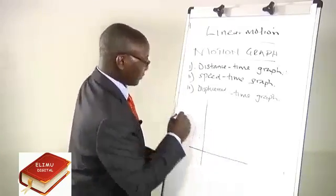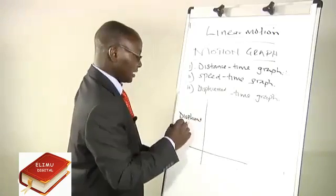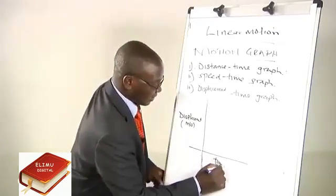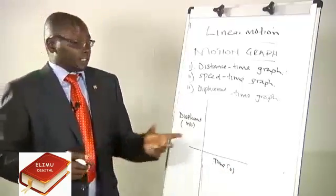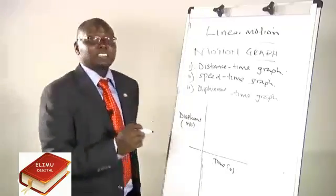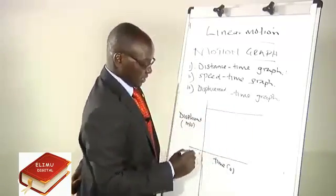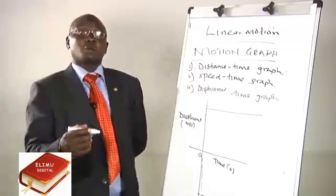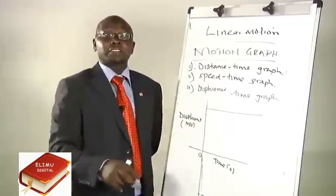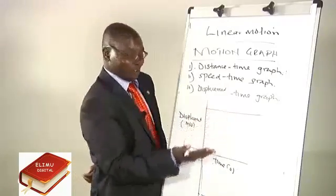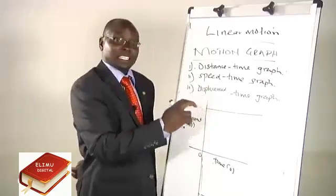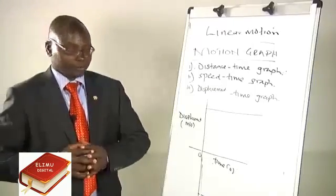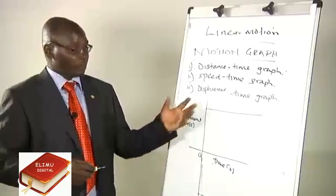For the displacement-time graph, displacement in meters is on the y-axis and time in seconds is on the x-axis. We must show the axis both above and below, because displacement being a vector quantity can be both positive and negative, depending on the position of the observer. We will stop here and after the break we will look at other motion graphs.